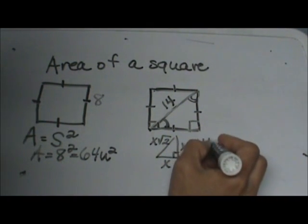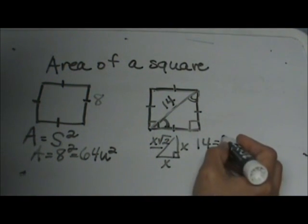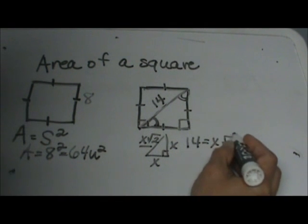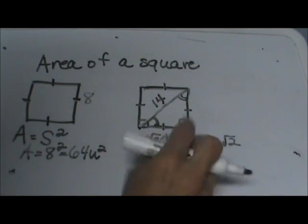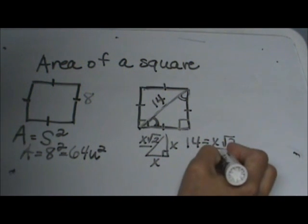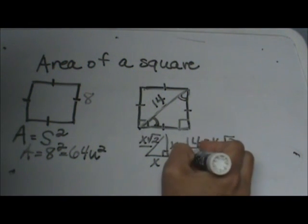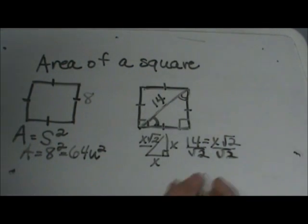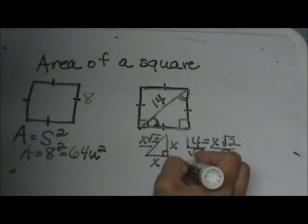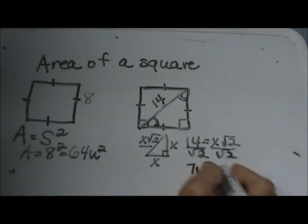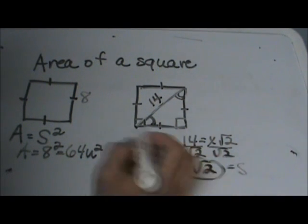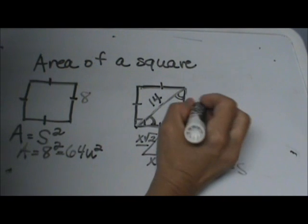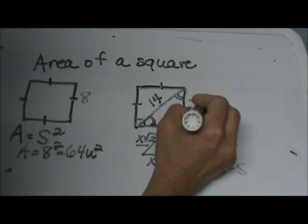So I'm going to take 14 and set it equal to x root 2. To get the x by itself, or to solve for the side, you're going to divide by the square root of 2, so 14 divided by the square root of 2 is just simply 7 square root of 2. So the side of the square is 7 square root of 2.